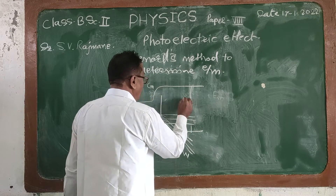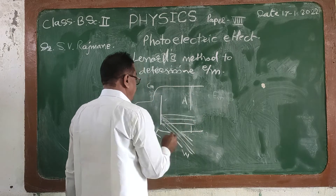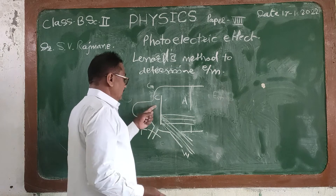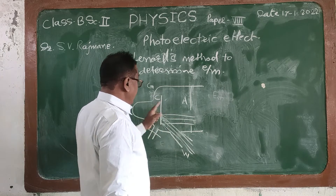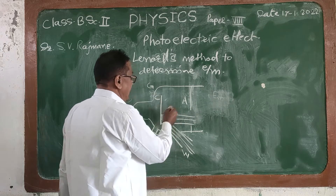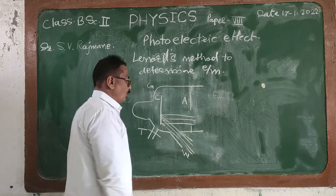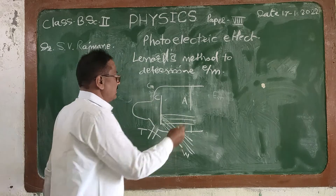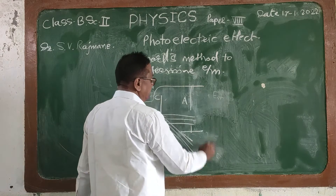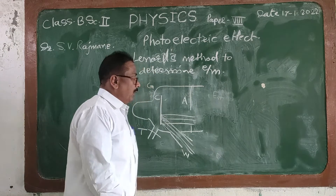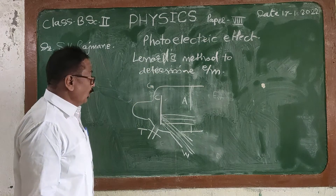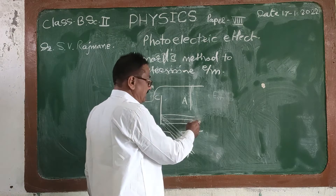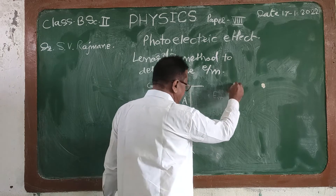Due to the incident light, emission of electrons takes place. These emitted electrons are accelerated toward the anode. The anode has a central hole through which the electrons are accelerated.